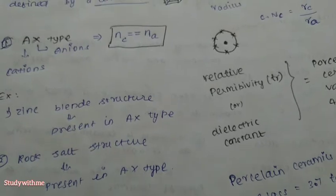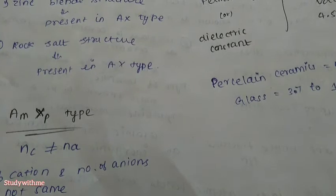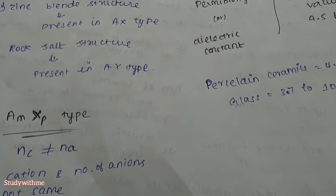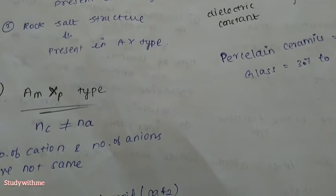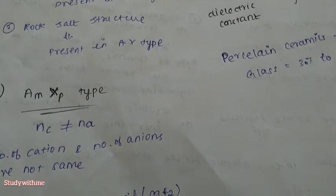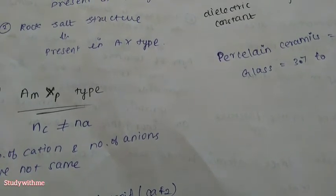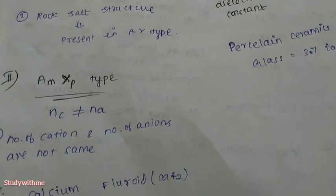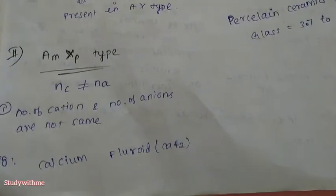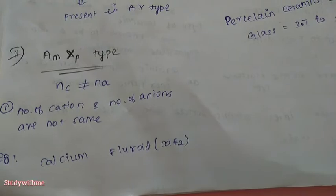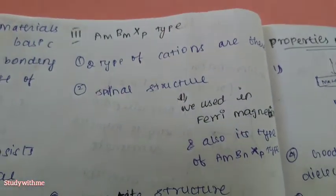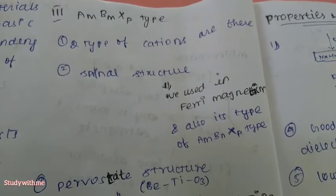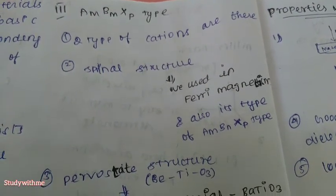In the AX type, there are 3 types: AX type, AmXp type, and AmBnXp type. In the AmXp case, the amount of cations and the amount of anions is not the same. For example, calcium fluoride. The next is the AmBnXp type, which is a spinel structure.